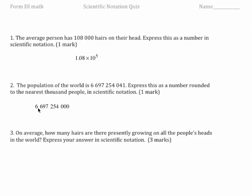So I want the decimal place to be just after the six. So I can move it over one, two, three, four, five, six, seven, eight, nine. So 6.697254 times ten to the power of nine.